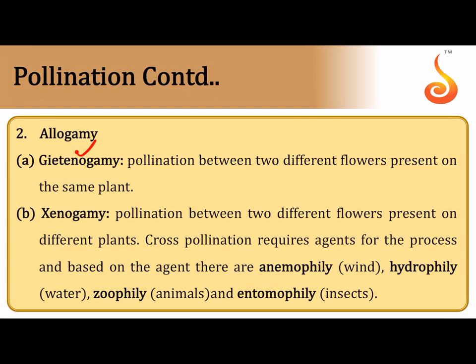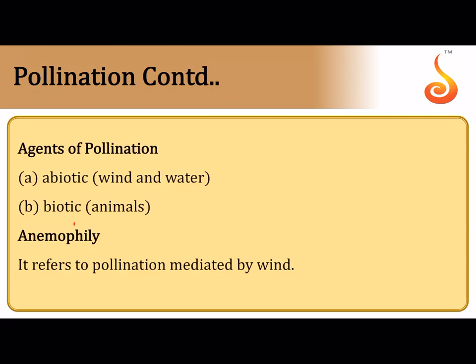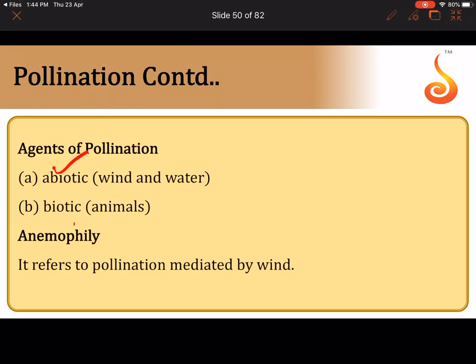Geitonogamy is functionally cross-pollination because it happens between two flowers of the same plant — geiton means neighbor. Genetically it could be self-pollination. Xenogamy is pollen falling onto the stigma of an entirely different plant, brought about by abiotic agents like wind and water or biotic agents like animals. Pollination by wind is called anemophily.